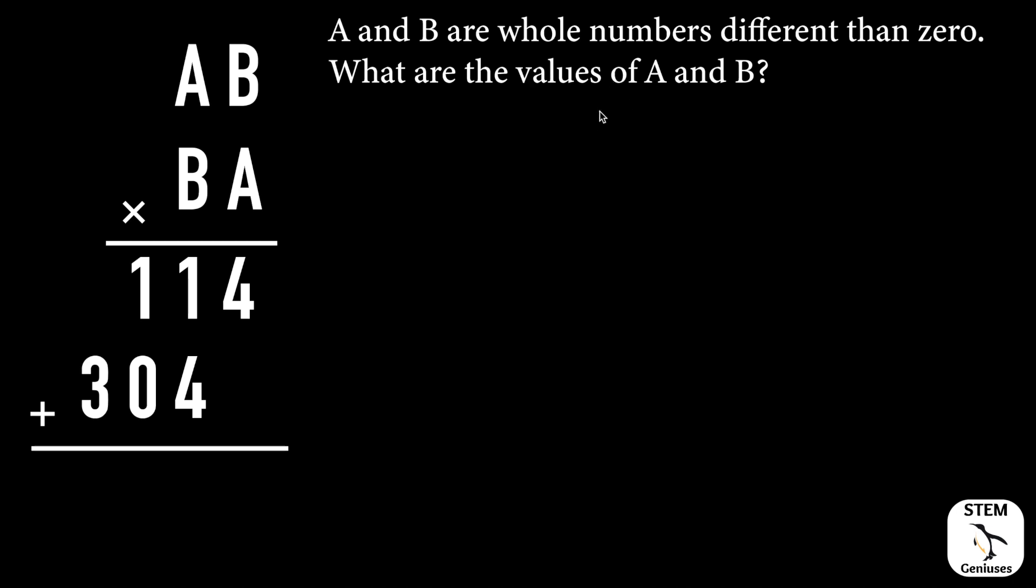Hi there, in this question we will solve this cryptogram question. In this cryptogram, AB is representing a digit, B is representing a digit. Let's read the question: A and B are whole numbers different than zero.